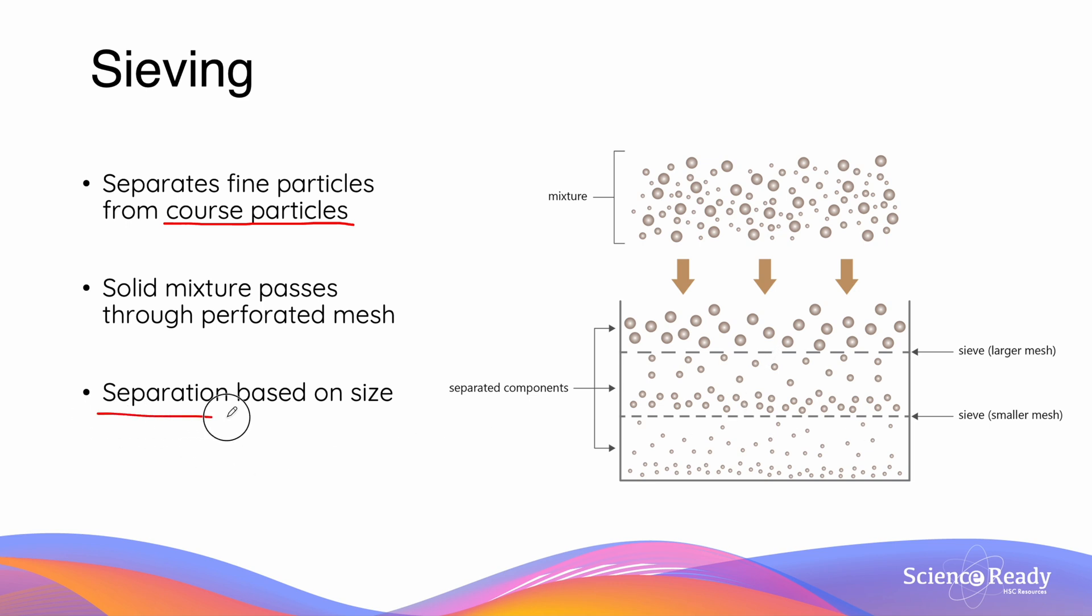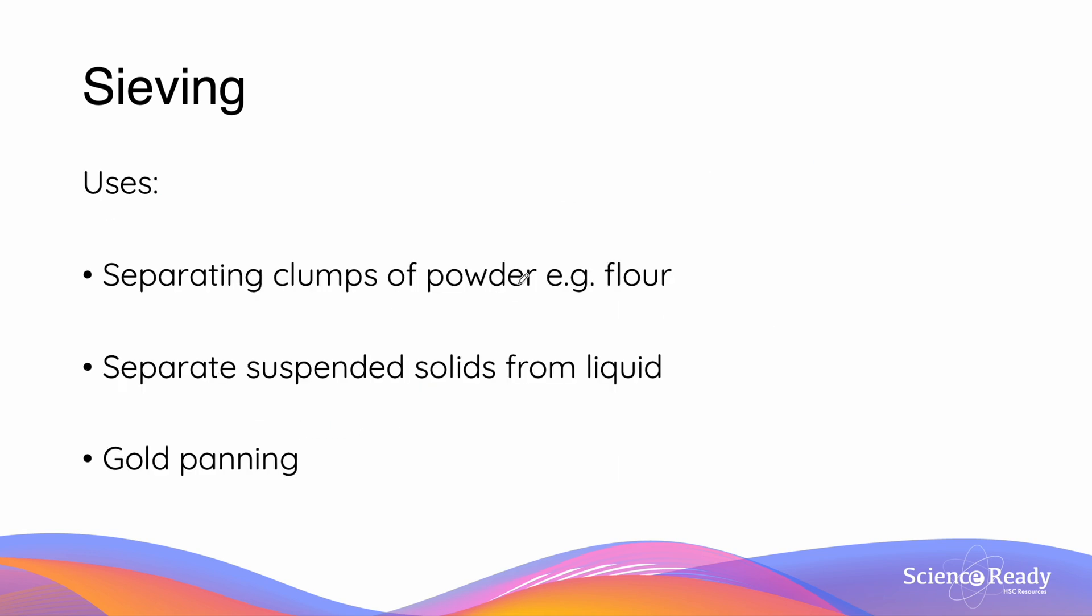This separation technique is based on the size of the particles. We use sieving for a multitude of reasons, including separating clumps of powder such as flour or sugar, separating solids that have been suspended in liquids, and often in gold panning.